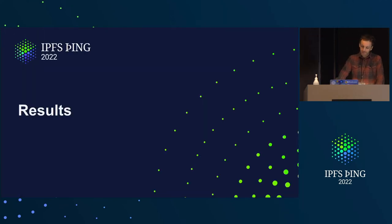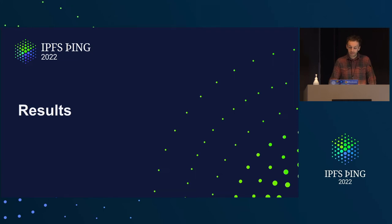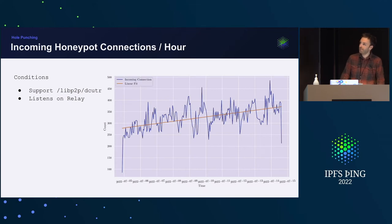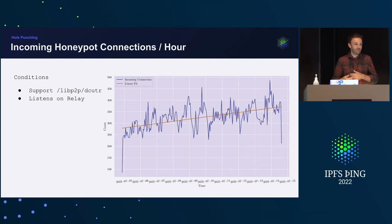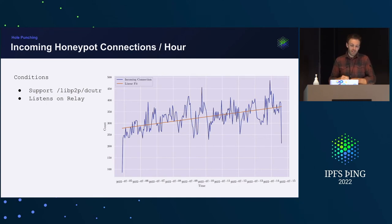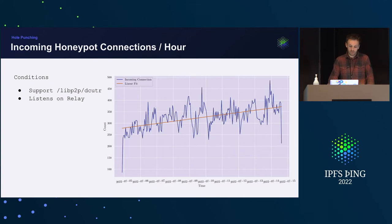Now for some first results — keep in mind I'm just running one client in my home network, so there's much more work to do for a comprehensive view. This graph shows incoming connections per hour to the honeypot. If we put a linear fit through it, we can see the number of incoming connections increases over time, as expected as 0.13 rolls out. We have roughly 300–350 new clients per hour connecting to the honeypot, which we can then use to attempt hole punches.